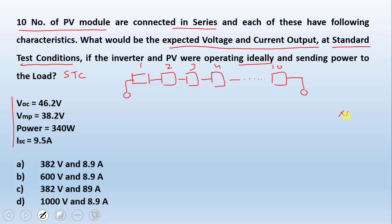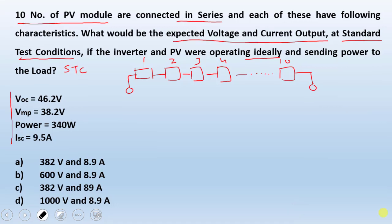Okay, we have all the information from this question and now we need to find out what is the voltage and current output of the system. Okay, we have PV modules connected in series and we need to find out what is the output current.